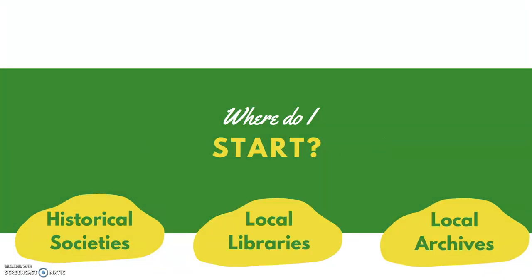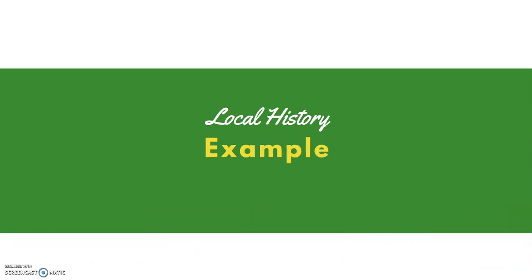If we've chosen to do a local history topic, where might we start? Well, we have to go straight to the source, and that's really easy to do if you're doing a local topic. You need to head over to your historical societies, your local libraries, and your local archives. Those local organizations are going to have some of the best resources for you — they'll know about different local history topics and what type of sources are available to you. To give you some food for thought, I'll share my own local history example of how I might do a local history topic for an NHD project.